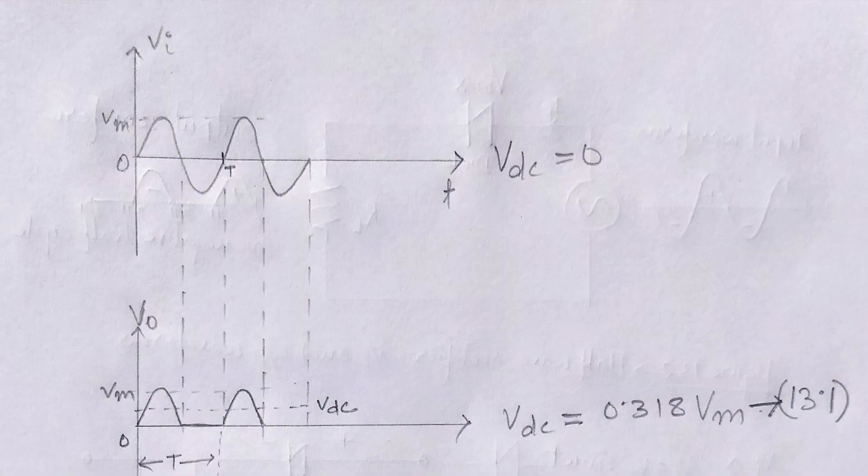The process of removing one half cycle of the input signal to establish a DC level is called half wave rectification.